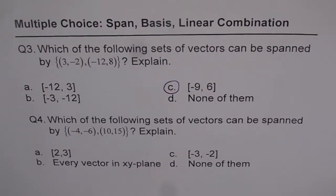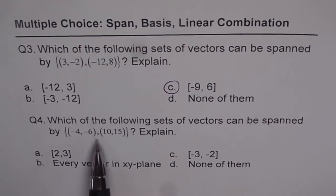So that is the right choice. The next one is, which of the following sets of vectors can be spanned by {-4, -6}, {10, 15} and explain. Actually speaking, these are also scalar multiples, right?